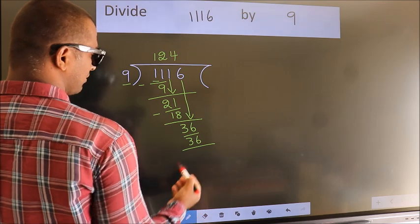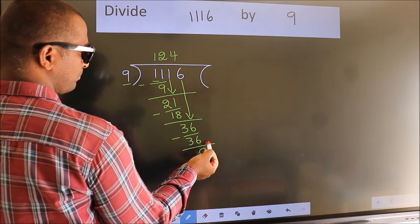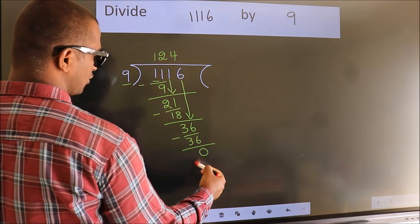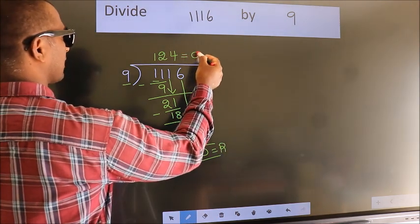Now we subtract. We get 0. No more numbers to bring it down. So we stop here. This is our remainder. This is our quotient.